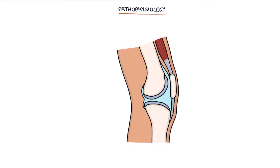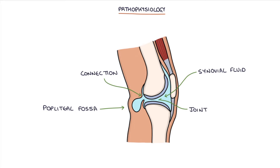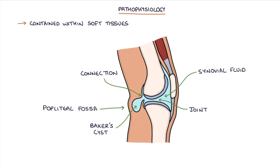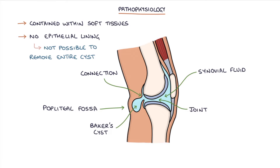Baker's cysts are formed by synovial fluid squeezed out of the knee joint and collecting in the popliteal fossa. A connection between the synovial fluid in the joint and the Baker's cyst can remain, allowing the cyst to continue enlarging as more fluid collects there. Baker's cysts are contained within the soft tissues and don't have their own epithelial lining, which means it's not possible to remove the entire cyst.